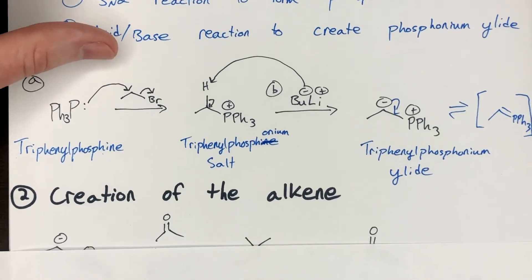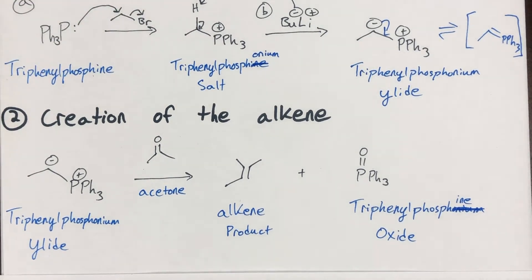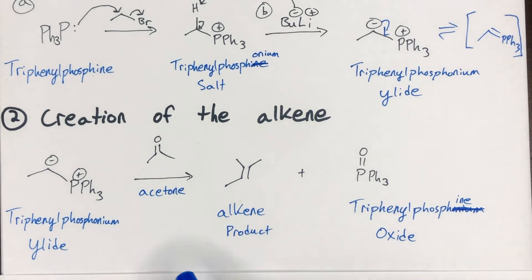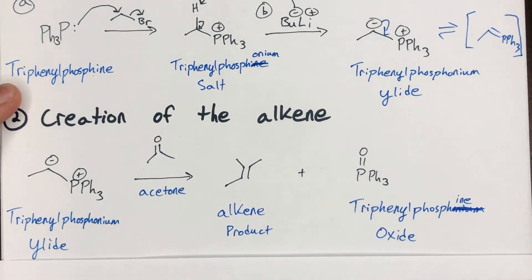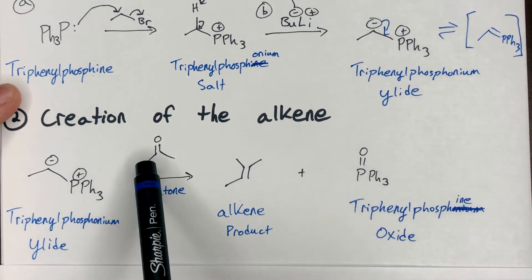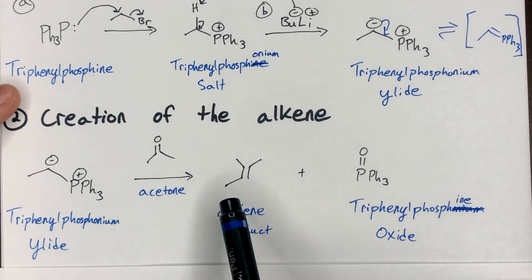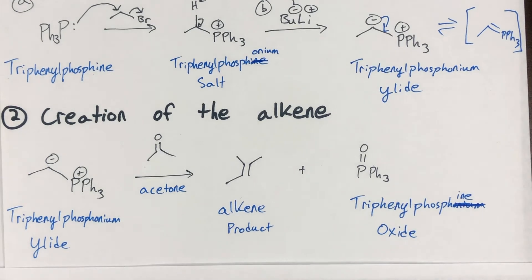Then lastly, you have the creation of the alkene — the generic Wittig reaction — where you have the triphenylphosphonium ylid reacting with a specific carbonyl, here an acetone structure, to create the alkene product. You can think of this as the R group of the ylid replacing the oxygen. As a byproduct you will make triphenylphosphine oxide, and it's critical to keep track of all atoms involved in the reaction.